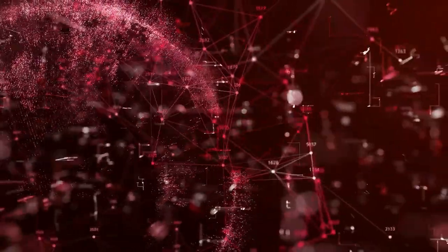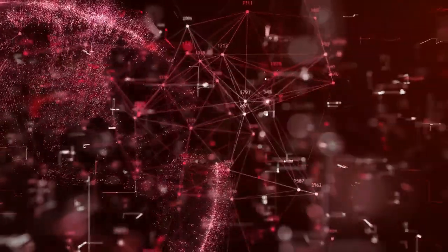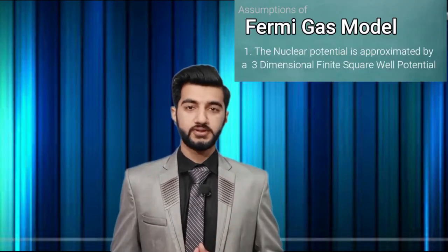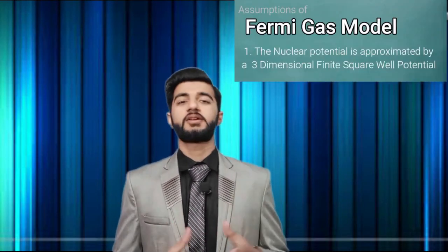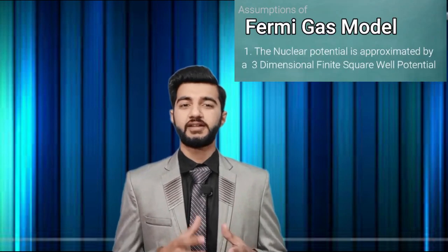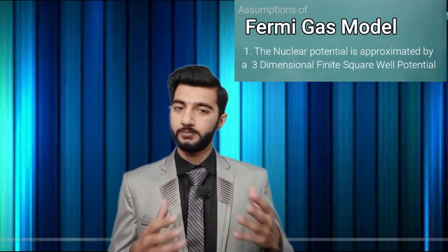Since fermions are non-interacting, they do not interact with each other, so it will resemble a Fermi gas. Now, how can the Fermi gas model be used to replicate the nuclear model? We have to make an assumption that the nuclear potential is approximated by a three-dimensional finite square well potential.